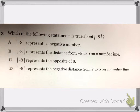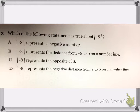Which of the following statements is true about the absolute value of negative 8? A. The absolute value of negative 8 represents a negative number. B. The absolute value of negative 8 represents the distance from negative 8 to 0 on a number line. C. The absolute value of negative 8 represents the opposite of 8.